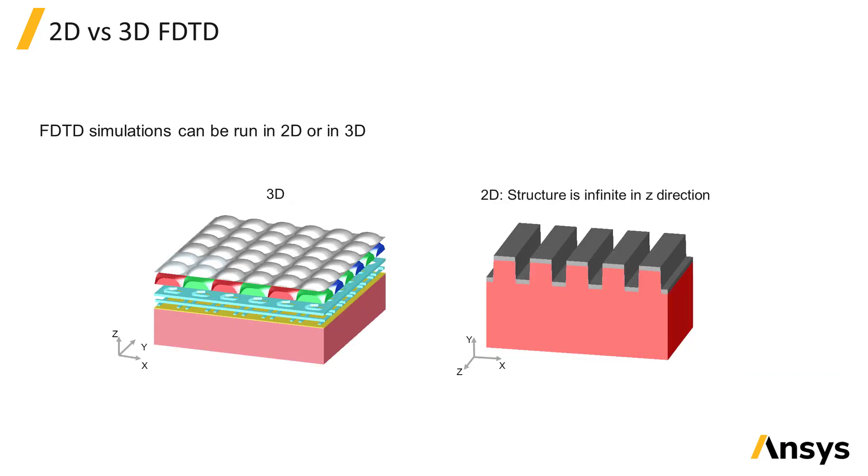FDTD simulations can be run in 3D or in 2D. It is important to remember that for 2D simulations the structure is infinite in the Z dimension. In some cases, 2D simulations are an approximation that can be run quickly, but in other cases they can be a fully accurate solution to the problem. For example, simulating line gratings, like the one shown here on the right, illuminated by plane waves, should be done in 2D.